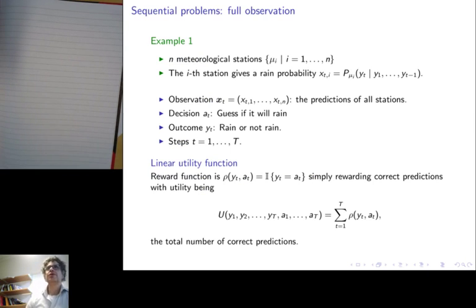So let's start with a simple example. Let's say you have n meteorological stations. The i-th station corresponds to some model of the world μ_i, giving probability of rain equal to x_t,i. Which is basically the probability of rain according to the model of the station, given the fact that it has rained or it hasn't rained in the last t-1 steps.